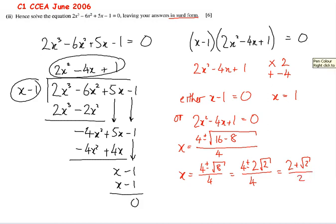And we're given our answers in surd form. So finally, let's write them out. So x = 1, or x = 2 ± √2 all over 2.